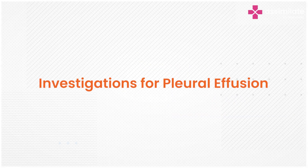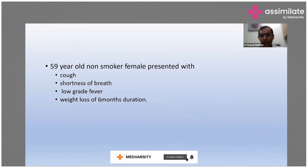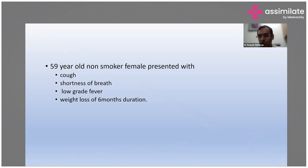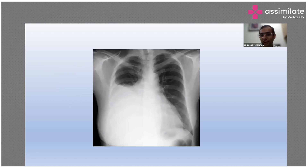This is a case-based approach to pleural effusion. A 59-year-old non-smoker female came with cough, shortness of breath, low-grade fever, and weight loss of six months duration. The first investigation that comes to mind is chest X-ray. According to guidelines, if cough is persistent for more than two weeks, the first investigation is chest X-ray and sputum examination — this was the X-ray of this female.